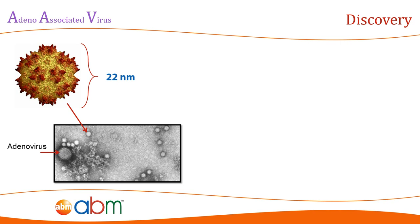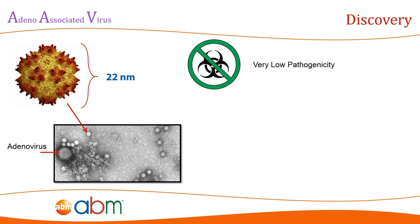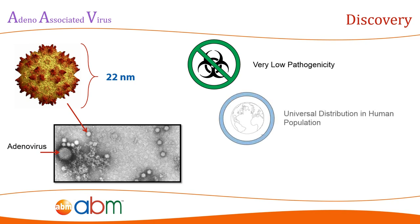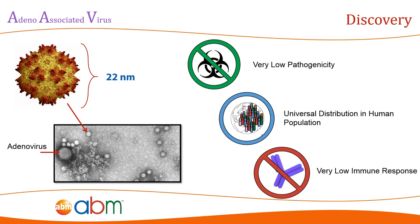AAV is also exceptional for its very low pathogenicity in comparison to its near-universal distribution in human populations. This virtually non-existent pathogenicity can be attributed to its inability to replicate on its own — it requires a co-factor to be able to replicate and cause a productive infection in the body. Even then, at worst the adeno-associated virus causes a very mild immune response, making it a great candidate for gene therapy due to the low damage it could potentially cause.